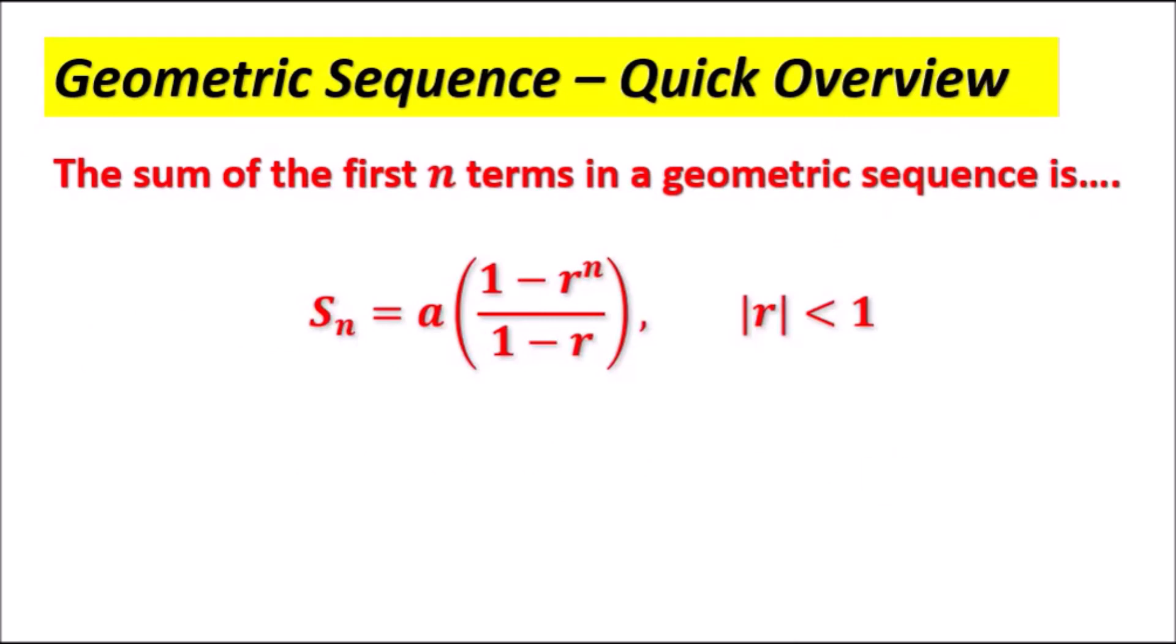Let's have a look at a quick overview. The sum of the first n terms in a geometric sequence is given by S_n = a(1 - r^n)/(1 - r), where a is the first term and r is the common ratio. If you know the first term and the common ratio, you can pretty much deduce it.